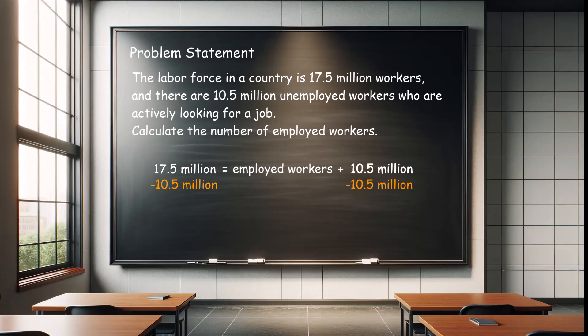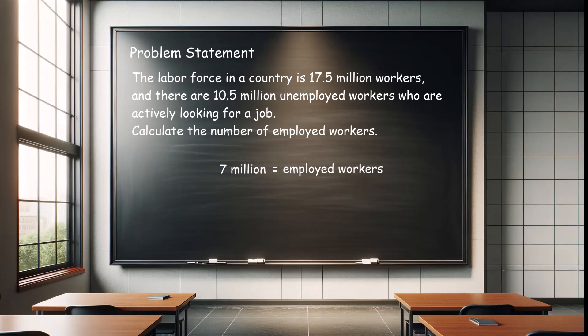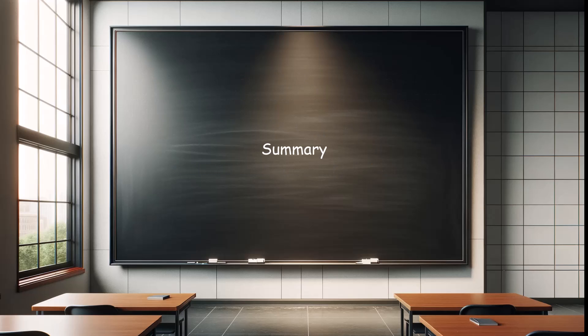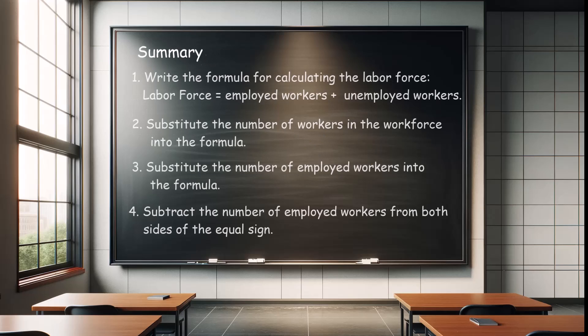This leaves zero unemployed workers on the right side of the equal sign and seven million employed workers on the left side of the equal sign. Congratulations — you have successfully learned how to calculate the number of employed workers based on the labor force and the number of unemployed workers.